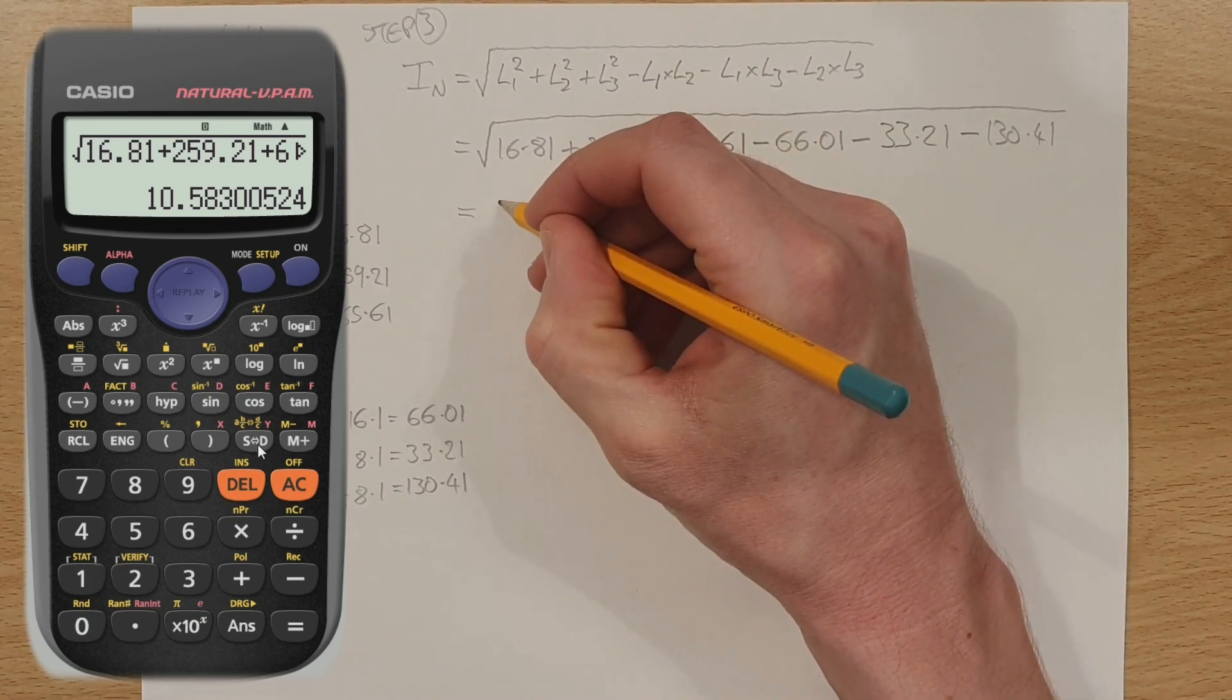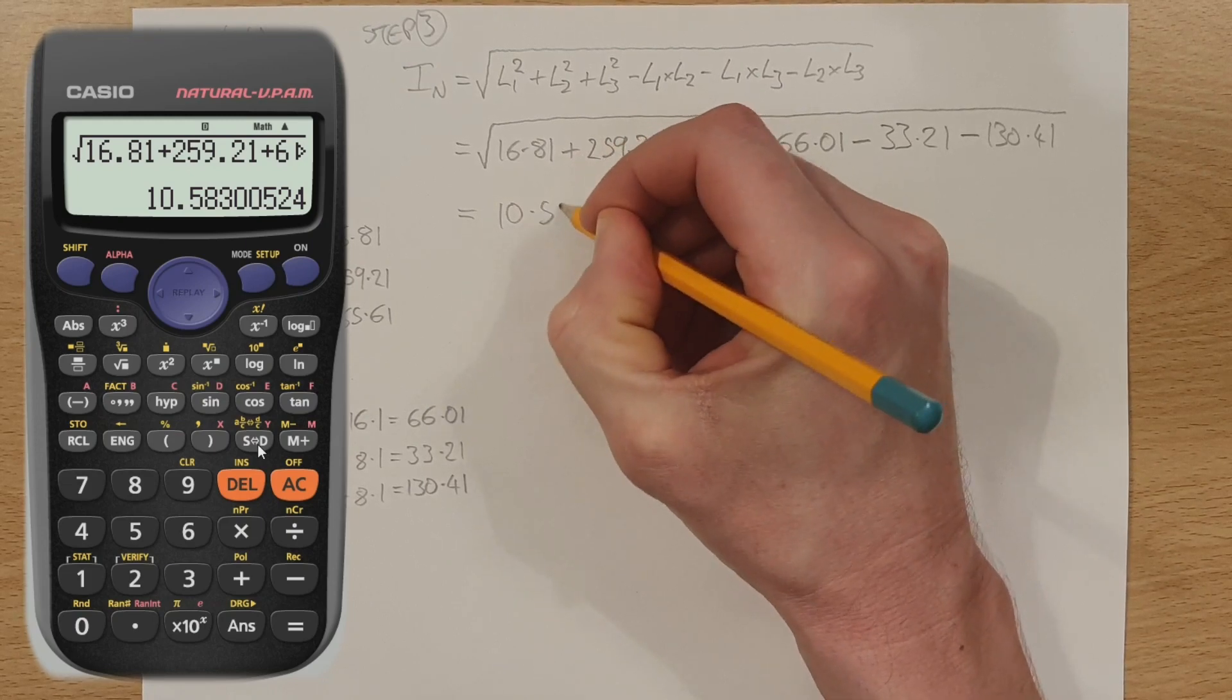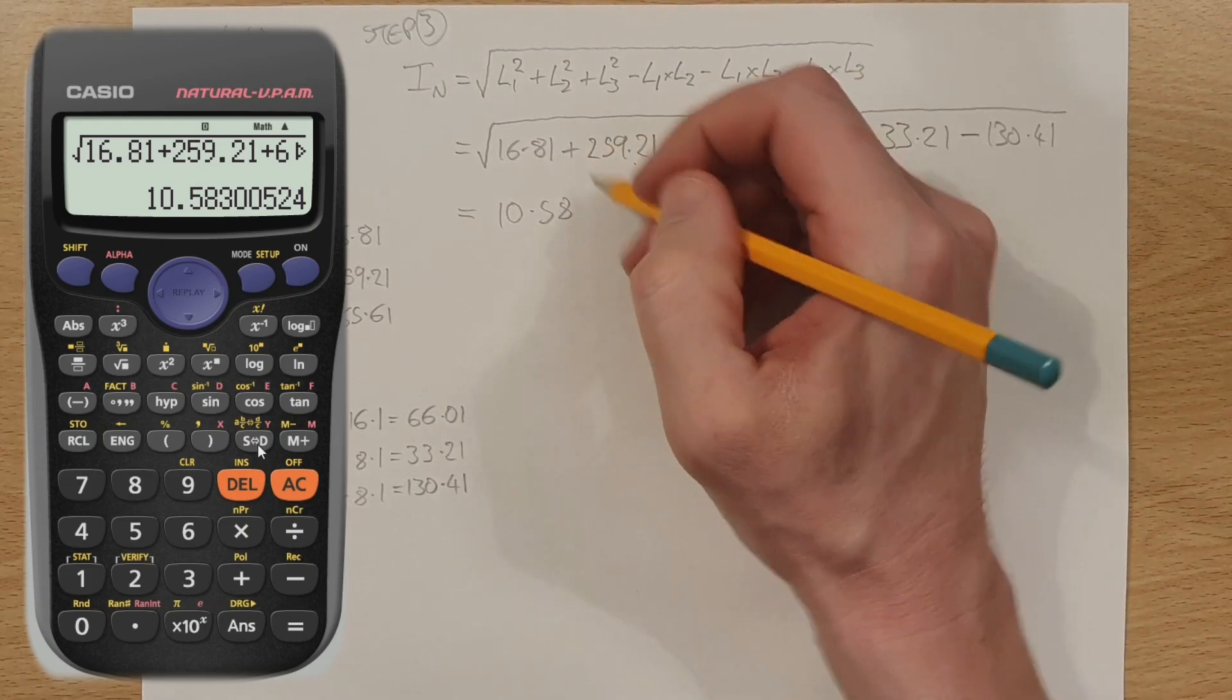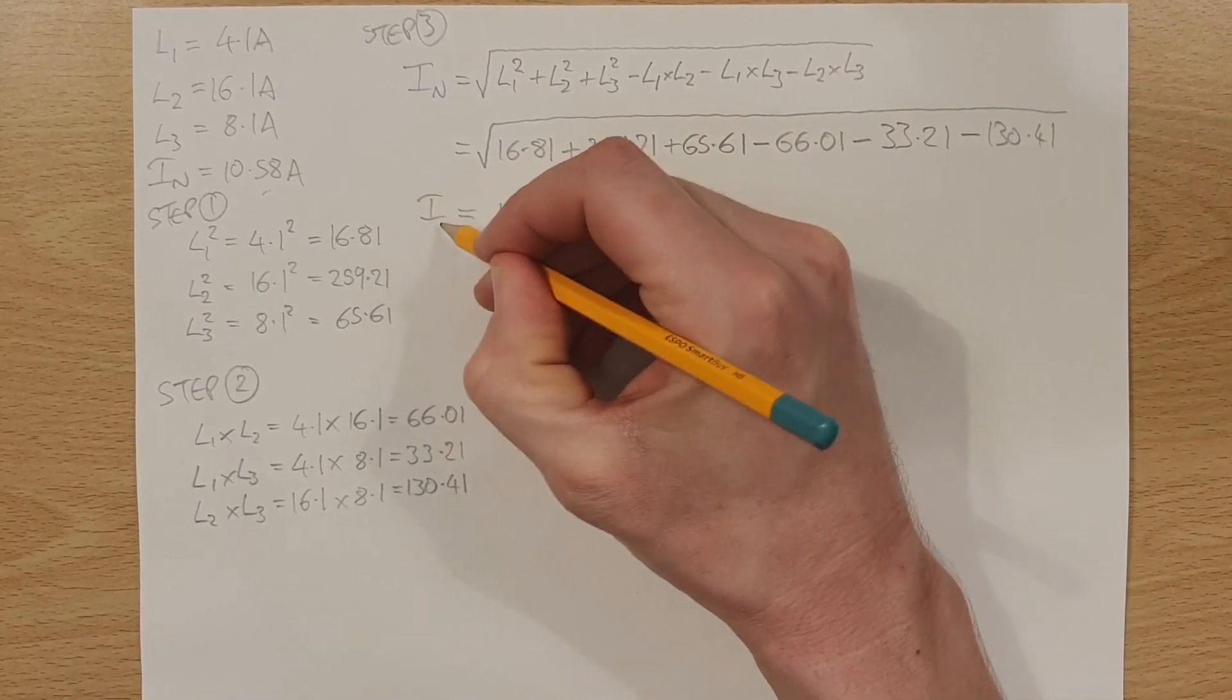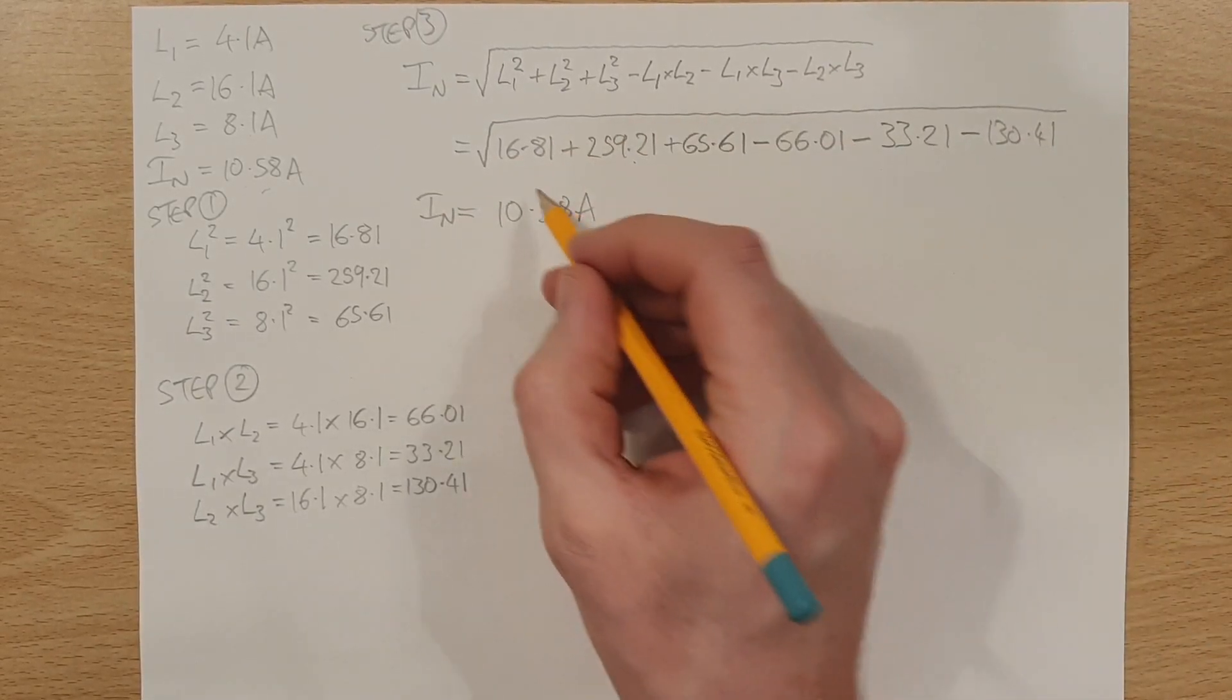So that comes out at 10.58. Again, we could go with three if we wanted, but we'll leave it at that 10.58 amperes. And there is our neutral current.